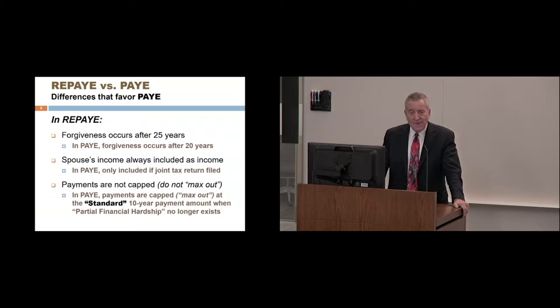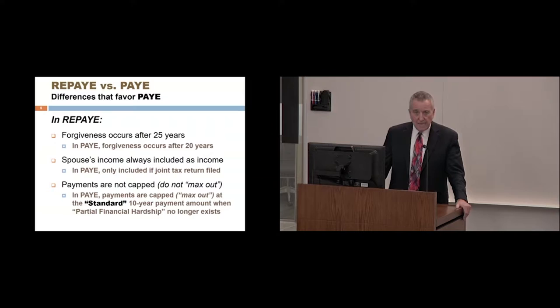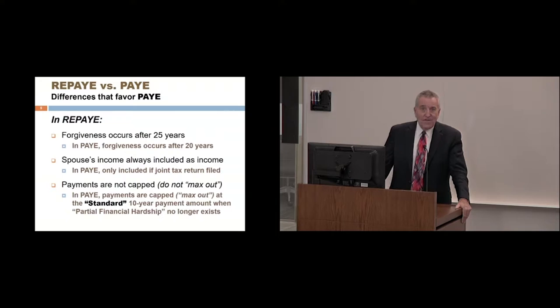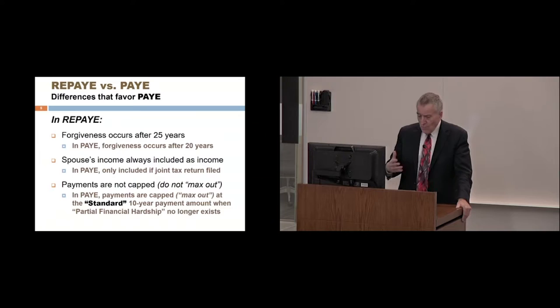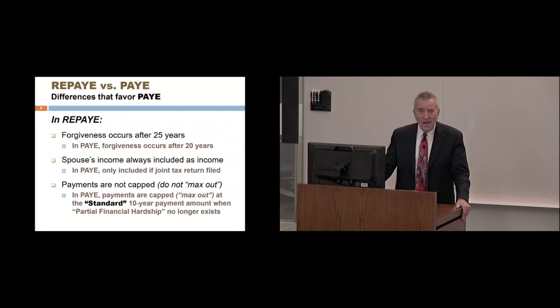What are the differences between REPAYE and PAYE that would favor choosing PAYE? In REPAYE, forgiveness occurs after 25 years if you have graduate loans, whereas in PAYE it would be after 20 years — five years sooner. That said, this difference doesn't matter today; it matters in 20+ years. And notably, if you've been in REPAYE for 19 years and 11 months and then switch to PAYE and make one more payment, you'd be eligible for forgiveness — those prior payments count as qualifying months toward the forgiveness benefit. You can always switch from one payment plan to another, assuming the plan still exists and you're eligible.